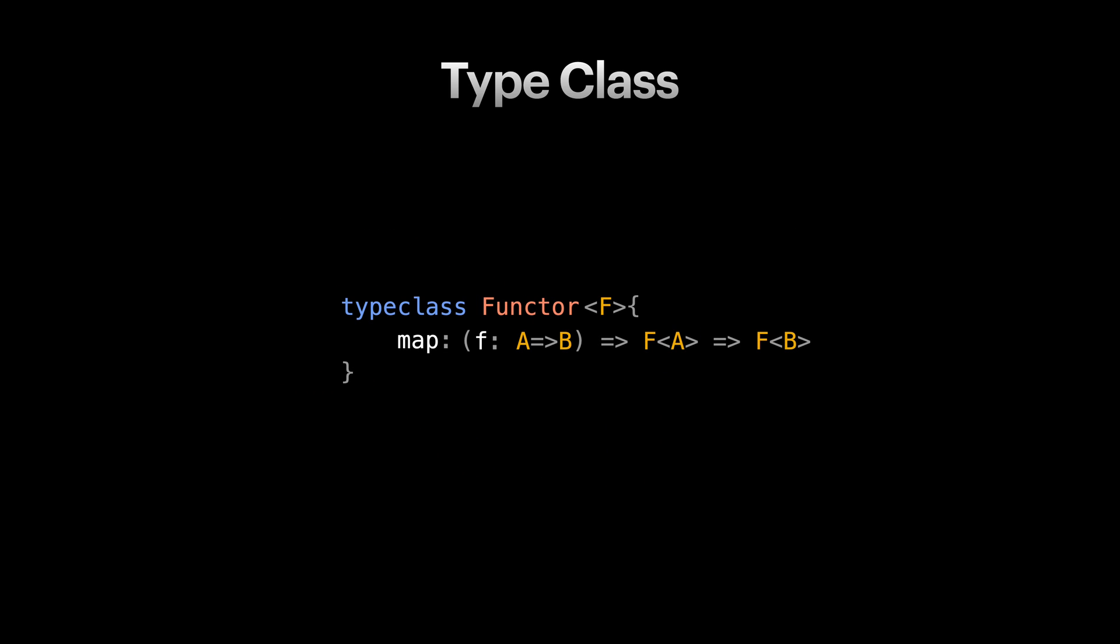In many functional languages, we have a specific syntax for type class. Well, this example is a made-up syntax, but it gives an idea on how type class is looked at. F represents any structure that supports map function with this signature. This forms a collection or class of types, which we named it functor.